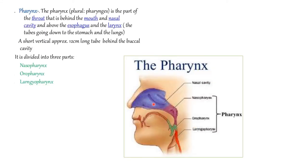After the nasal cavity comes the pharynx. The pharynx is divided into three parts: nasopharynx, oropharynx, and laryngopharynx. They also contain lymphoid tissue known as tonsils. This pharynx then divides into two parts — the larynx, which forms the further respiratory system, and the esophagus, which forms the food tube.